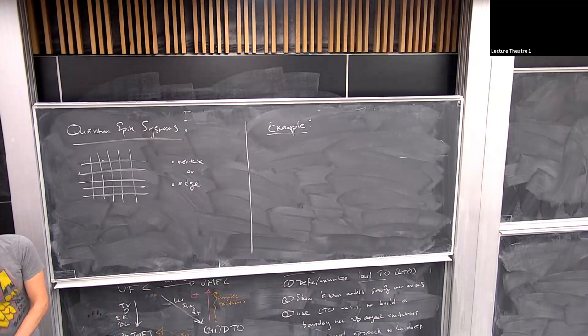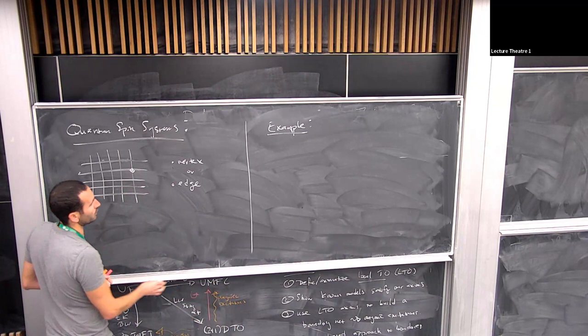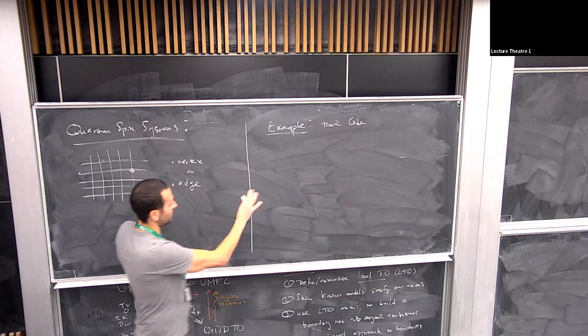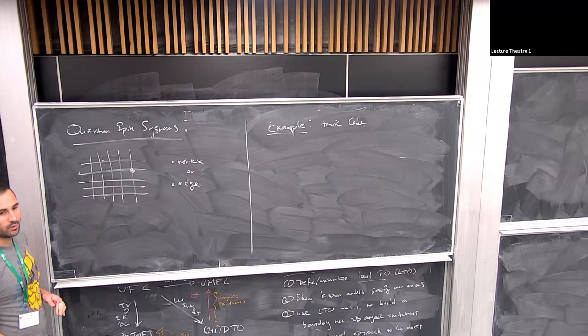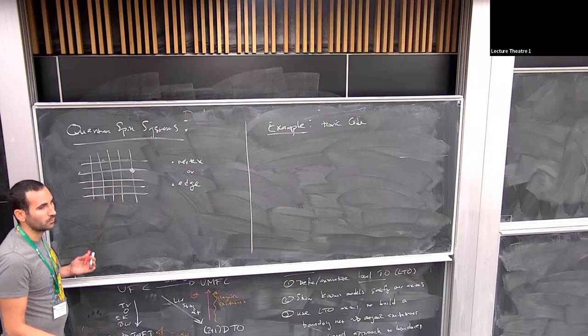To every vertex we'll put a qudit. For Toric code, we'll put a copy of C² on every vertex (really an edge lattice). The degrees of freedom can be on the edges instead of the vertices; I'll draw pictures with them on the vertices because it's easier, but you can do either.